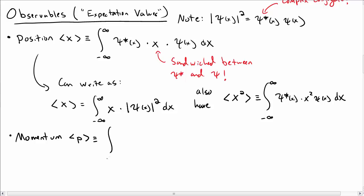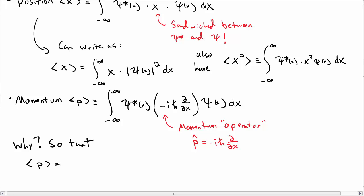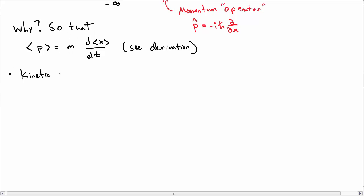For momentum, the expectation value of p is written as the integral of psi-star times minus i h-bar times the partial derivative with respect to x, acting on psi, dx. We call this the momentum operator, denoted p-hat, where p-hat equals minus i h-bar times partial over partial x. We write it as a derivative so that the expectation value of p equals m times d/dt of the expectation value of x — namely, momentum is what you'd expect from measurements. See a derivation in another video.